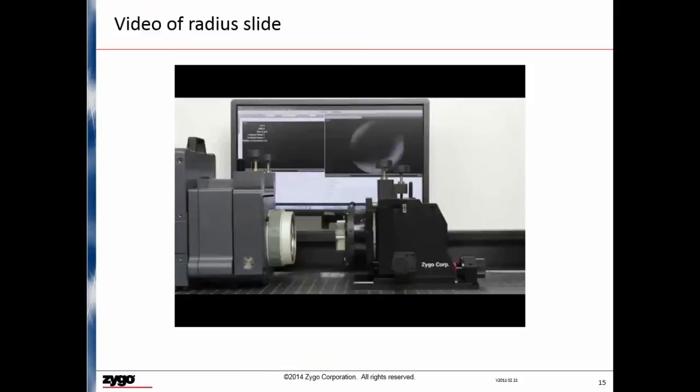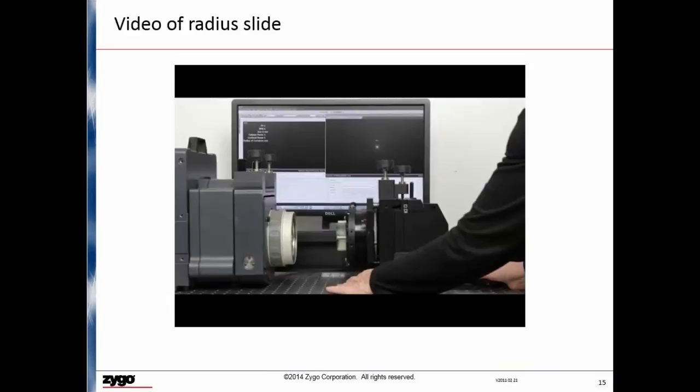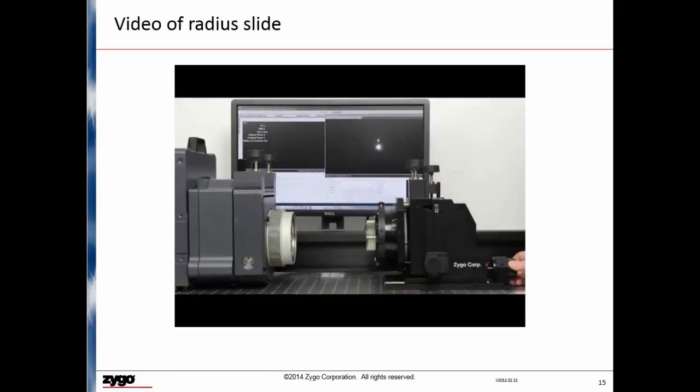Once the cat's eye position is nulled, we switch back to the align mode and move the part under test to the approximate confocal position. Once again, the fringe pattern is nulled by adjusting the XY position of the part under test as well as the Z position. When the cavity is nulled, the user can enter the parameters for the measurement and press the measure button. The interferometer will then take the data at the confocal position.